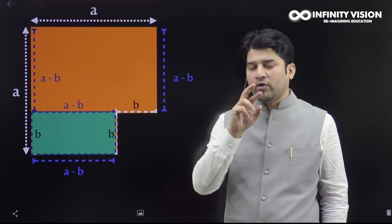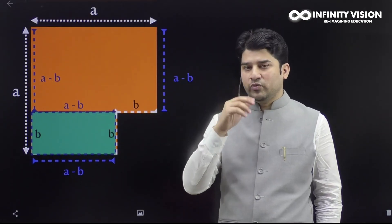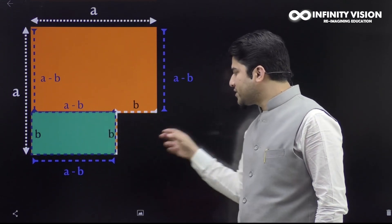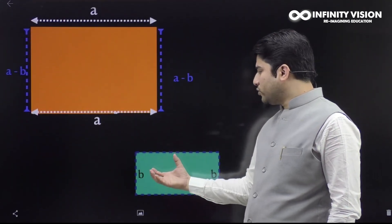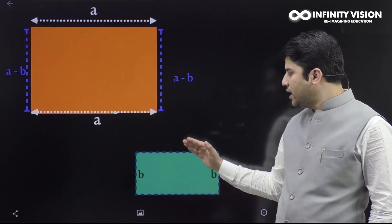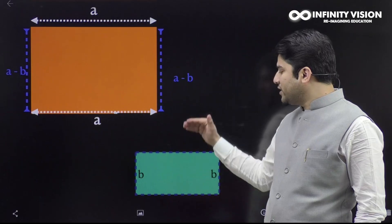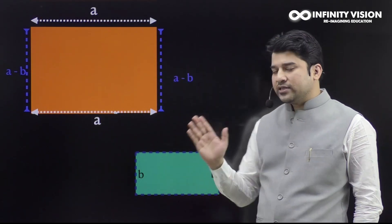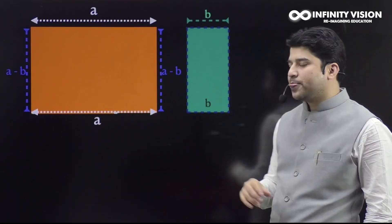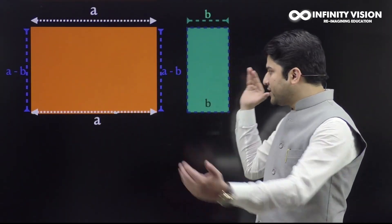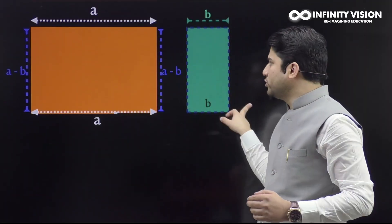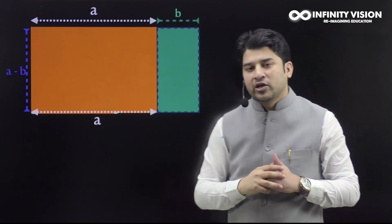Now I'm going to carve this rectangle out. You have the a by (a - b) rectangle and the b by (a - b) rectangle. I'm going to align them in such a way that both (a - b) sides align together — so I'm going to rotate one and place it here. Now I can fix these two rectangles together to make a bigger rectangle.